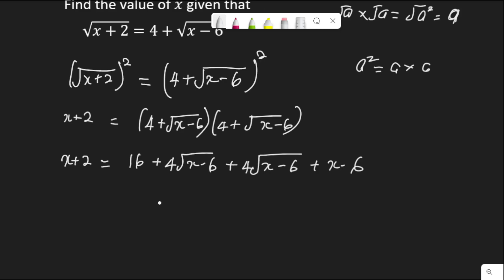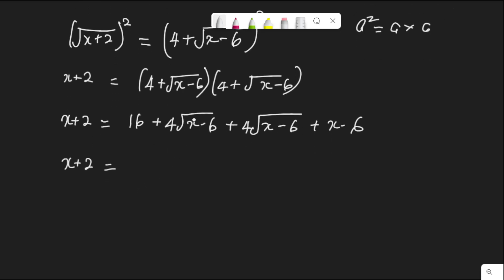Just like what we did on the left hand side, I have x plus 2 equal to — let me add these: the two terms 4 root x minus 6 can be added together since both of them are root x minus 6. So 4 plus 4 is 8, giving 16 plus 8 root x minus 6, then plus x minus 6.